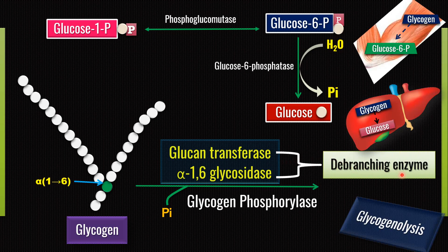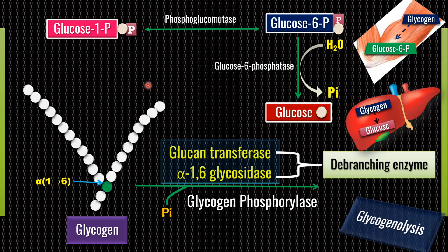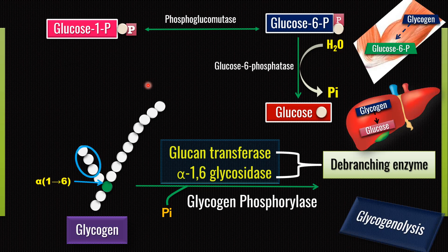The de-branching enzyme is a bifunctional enzyme with two enzymatic activities: glucan transferase activity and α-1,6 glycosidase activity. Further action by glycogen phosphorylase and inorganic phosphate then removes glucose one by one from the other branch, producing glucose-1-phosphate. This process continues until there are four glucose residues remaining in that particular branch.